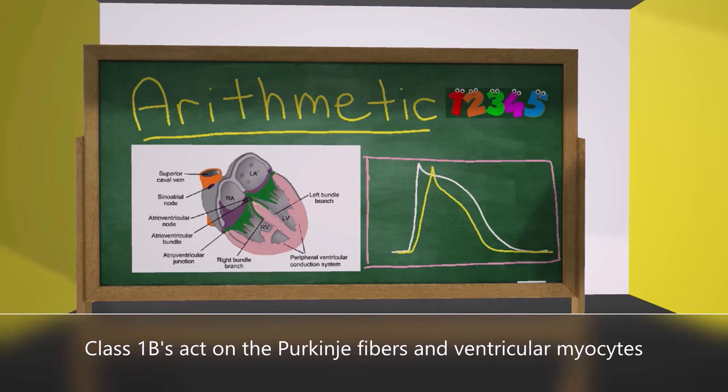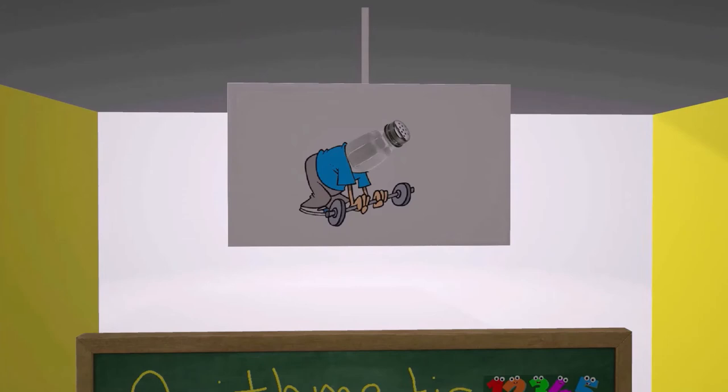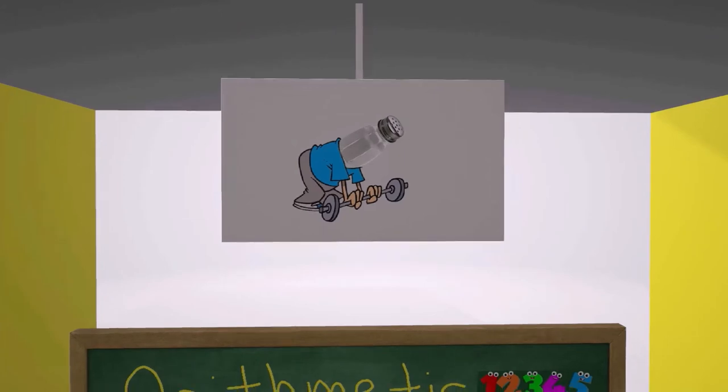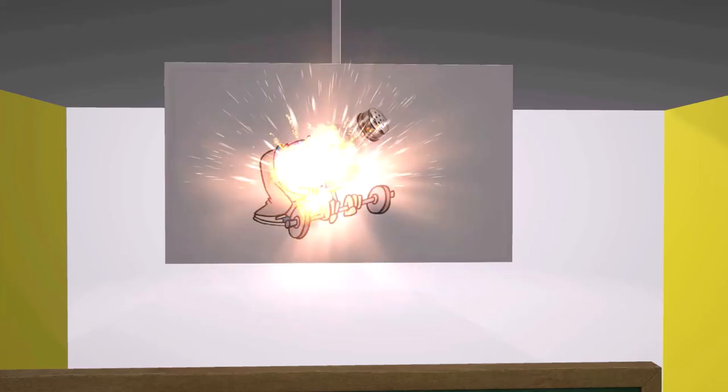myocytes, but not on the atrial cells as was the case in Class 1A anti-arrhythmic drugs. Now how do they work? Let's move up for a minute. Here we see that in the classroom, this TV always has the sodium channel on because this guy is a salt shaker and this is the sodium channel. But we see here that he's very weak, he's not very strong. This is the weak sodium channel and here again it's